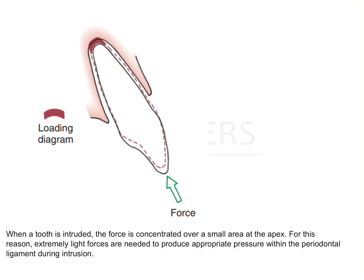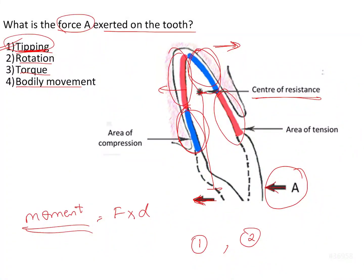Another type of tooth movement occurs when the force is concentrated at the tip — this is intrusion or extrusion type of tooth movement. The entire force gets concentrated on one point over the area of the apex. This is another reason why intrusion and extrusion forces need to be extremely light, because no other periodontal area is withstanding the forces — only the apex. Since this is a very small area that must withstand the applied force, the forces need to be low.